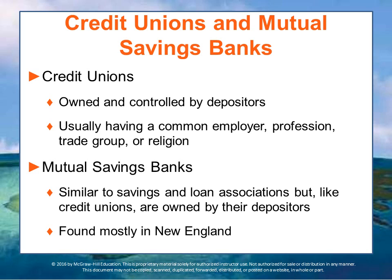Mutual savings banks are similar to savings and loans, but like credit unions, they are owned by their depositors. Among the oldest financial institutions in the United States, they were originally established to provide a safe place for savings of particular groups of people — for example, fishermen. These are found mostly in New England, as a place where people could maintain and keep their funds and assets in a safe location — a mutual savings bank.